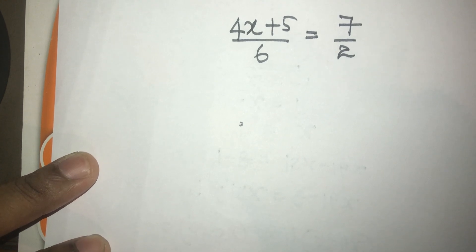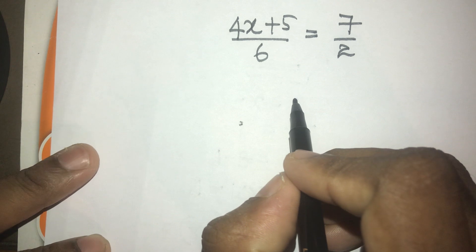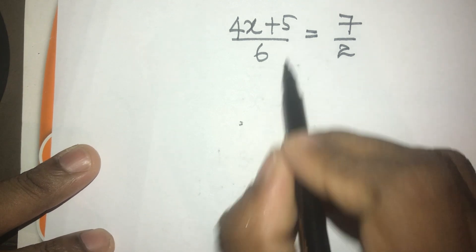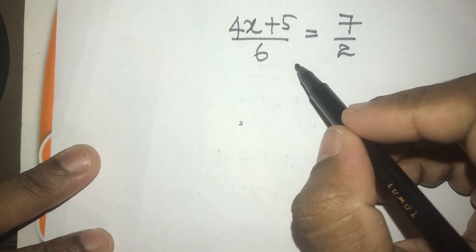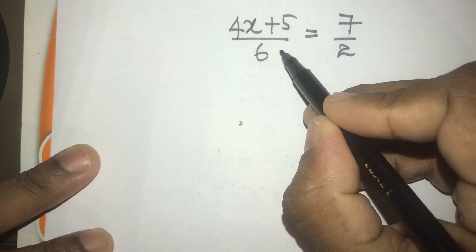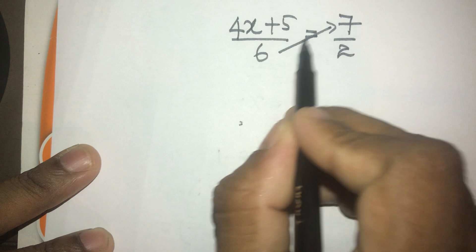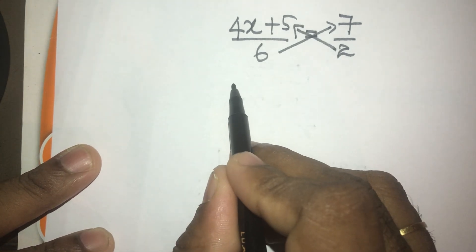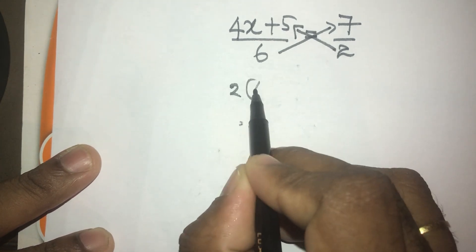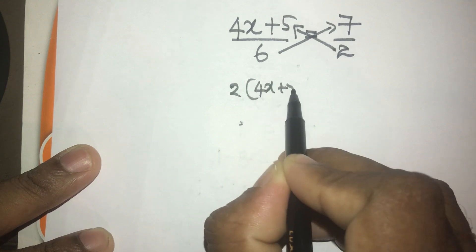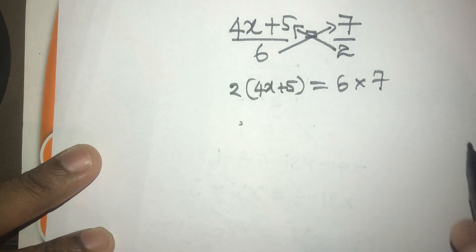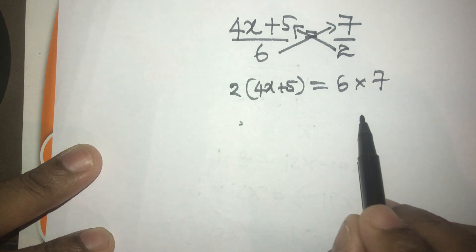Let's solve this equation as well. In order to solve this equation, we need to multiply the left side by 2 and the right side by 6. I will show how we can multiply them. Using this method, 2 into 4x plus 5 equals 6 into 7.